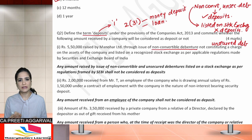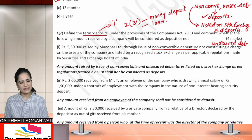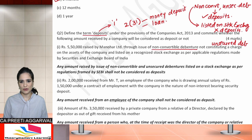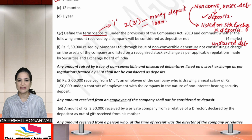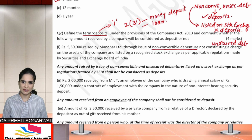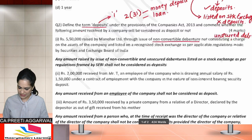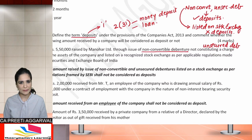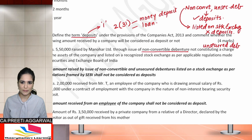If the debenture is non-convertible and unsecured, it is generally considered as a deposit. But if that same non-convertible unsecured debenture is listed on the stock exchange — as in this case — then it will not be considered as a deposit. This is why I included this question, so you learn these important points.